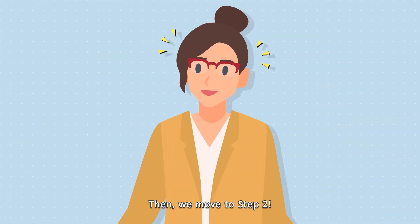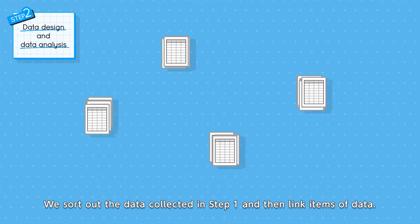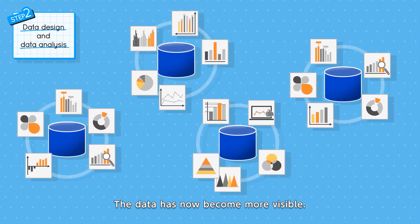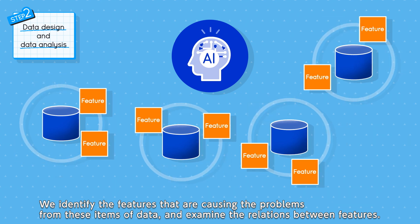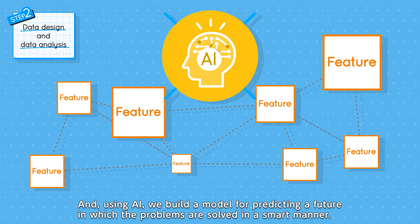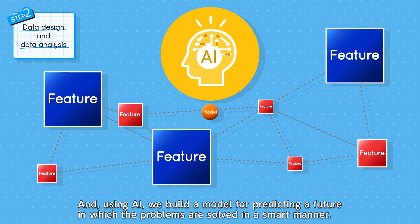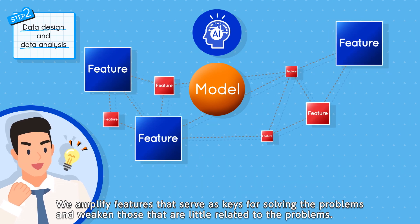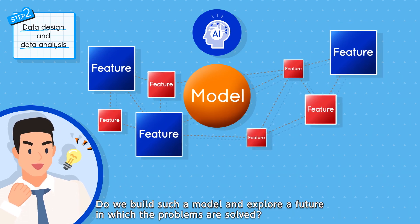Then, we move to step two. Step two is data design and data analysis. We sort out the data collected in step one and then link items of data. The data has now become more visible. Here, AI comes into play. We identify the features that are causing the problems from these items of data and examine the relations between features. And using AI, we build a model for predicting a future in which the problems are solved in a smart manner. We amplify features that serve as keys for solving the problems and weaken those that are little related to the problems. Do we build such a model and explore a future in which the problems are solved?